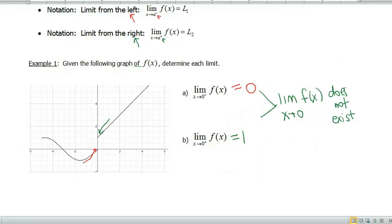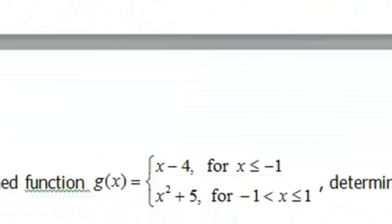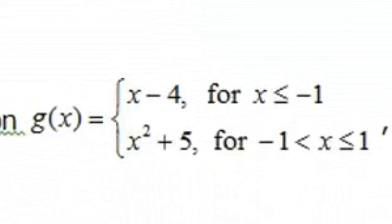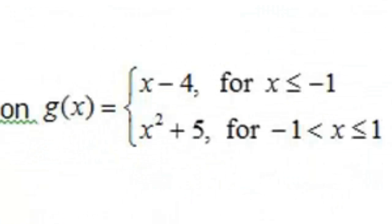Let's take a look at a formula now. We've got g(x) is equal to the piecewise function x minus 4 for x less than or equal to negative 1, and x squared plus 5 for negative 1 is less than x strictly less than 1.